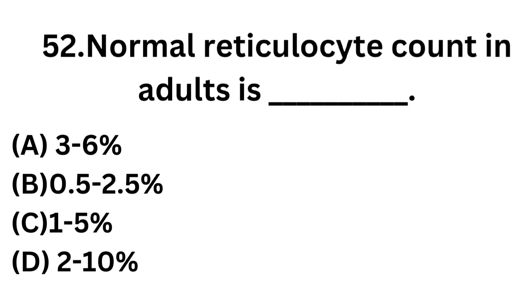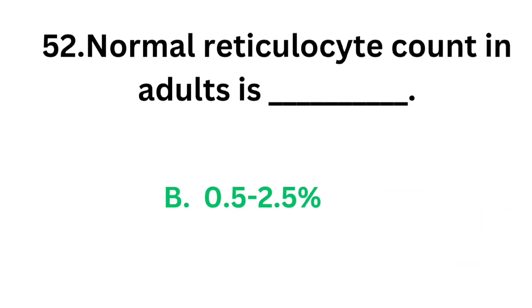Question number 52: Normal reticulocyte count in adult. Option A: 3-6%. Option B: 0.5-2.5%. Option C: 1-5%. Option D: 2-10%. The correct answer is option B, 0.5-2.5%. Normal reticulocyte count in an adult is 0.5-2.5%.